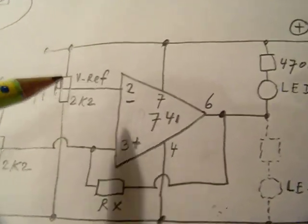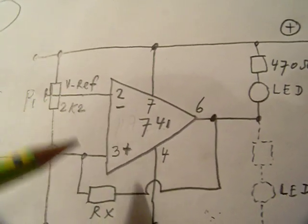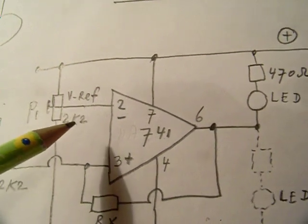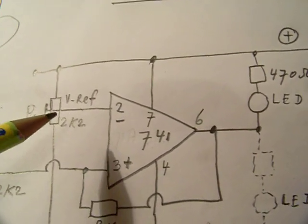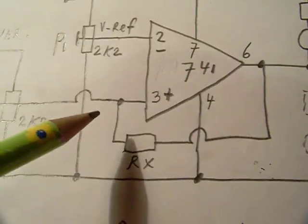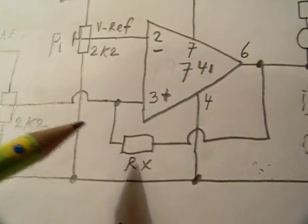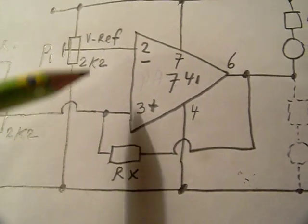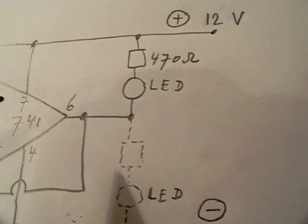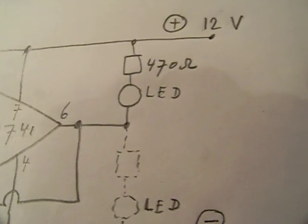They have two inputs, here pin 2 and pin 3. And when we apply a fixed voltage to one pin, and we apply a varying voltage to the other pin, on a certain moment when we vary the voltage, the op-amp output gets high. And that means that, in this case, suddenly the LED lights up.